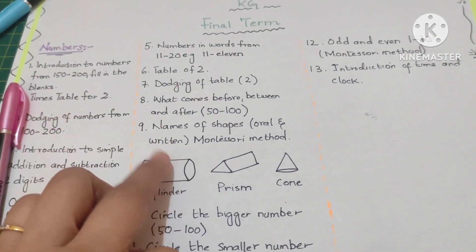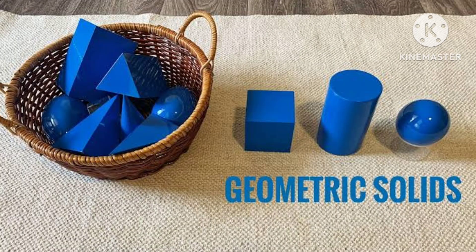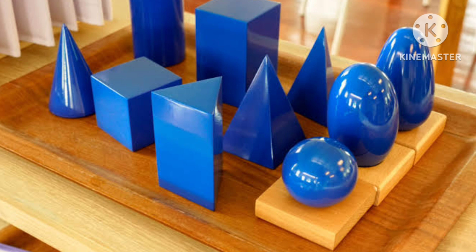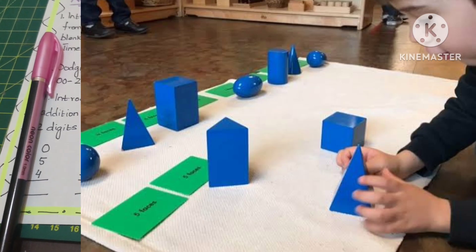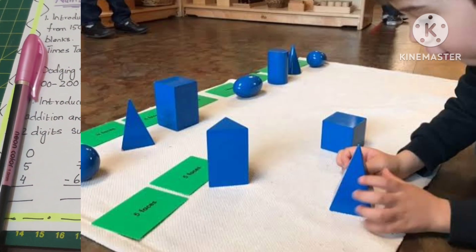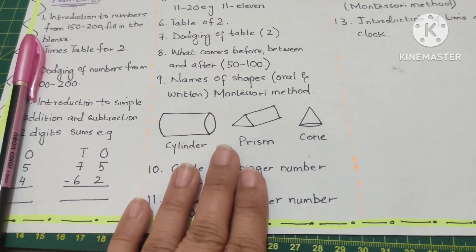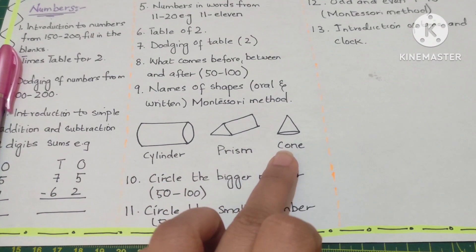Names of the shapes, oral and written. They are being introduced to the geometrical solids. In first term they've been given the geometrical solids of Montessori method and they know how many geometrical shapes are there and how many sides and corners are there. So now they'll be learning the names of the geometrical solids, oral and written. Cylinder, prism and cone will be given.